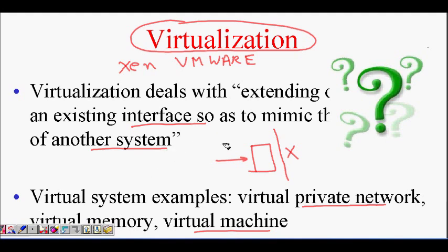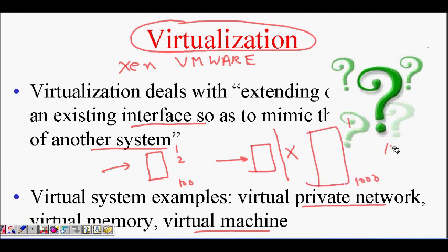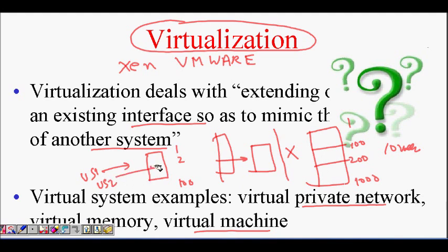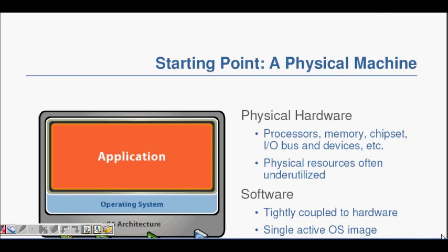Take virtual memory as an example. Each process sees its memory starting from one, but actually the memory runs from one to a thousand and there are ten users. An interface is maintained so that user one is allocated memory from 1 to 100, user two from 101 to 200, and so on. Even if a process is writing to line number five, it will actually be written to line number 105 in real memory — but the process thinks it is writing to line five. This is virtualization.